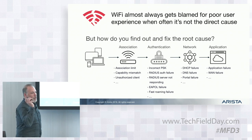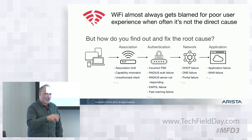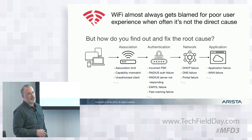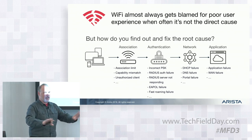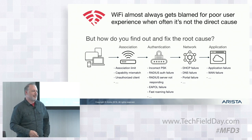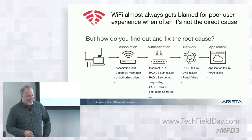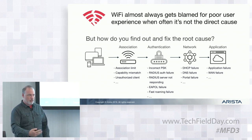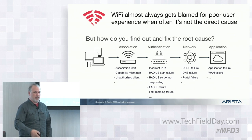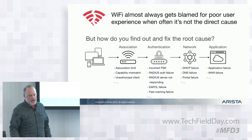As we all know, Wi-Fi gets blamed. It could be any one of these problems — association failure, the RADIUS server didn't answer, the DHCP server scope is full. Any of those problems just means the users say Wi-Fi sucks. The funny thing about Wi-Fi is the symptom is always the same: it doesn't work. It could be a certificate server that failed, it could be just any of these things.